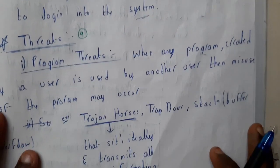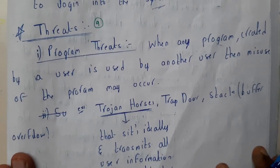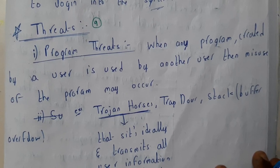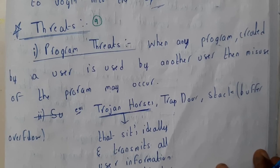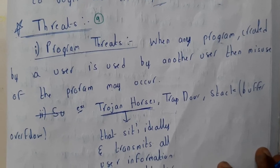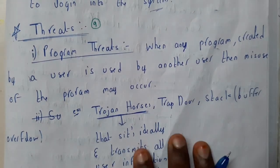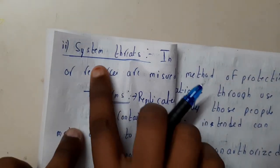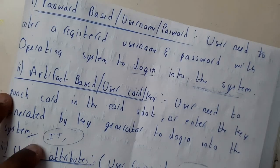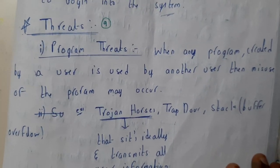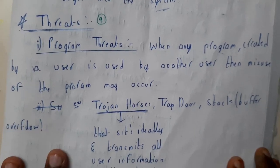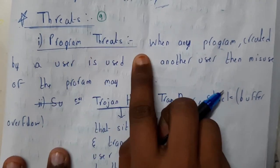Hello guys, we are back with our next tutorial. In this tutorial let us go through threats. There are two types of threats: program threats and system threats. The program threat is simple to understand, and the system threat is also easy, but please try to remember the examples as they are really important.